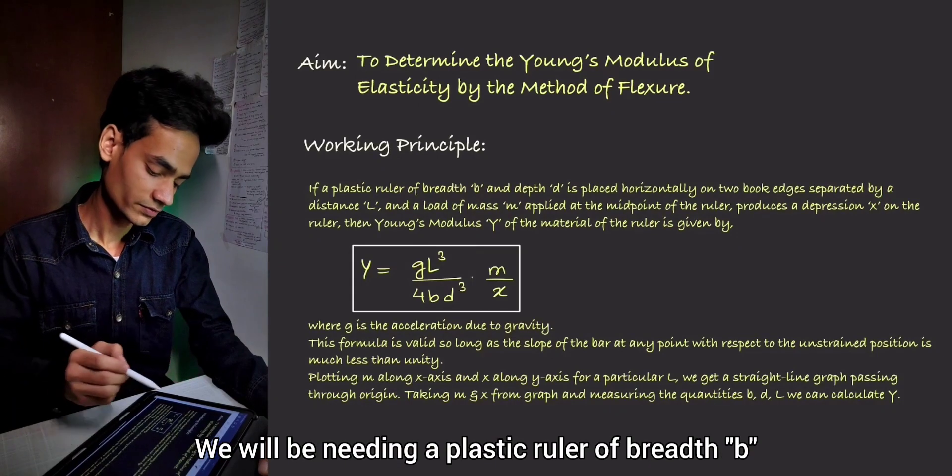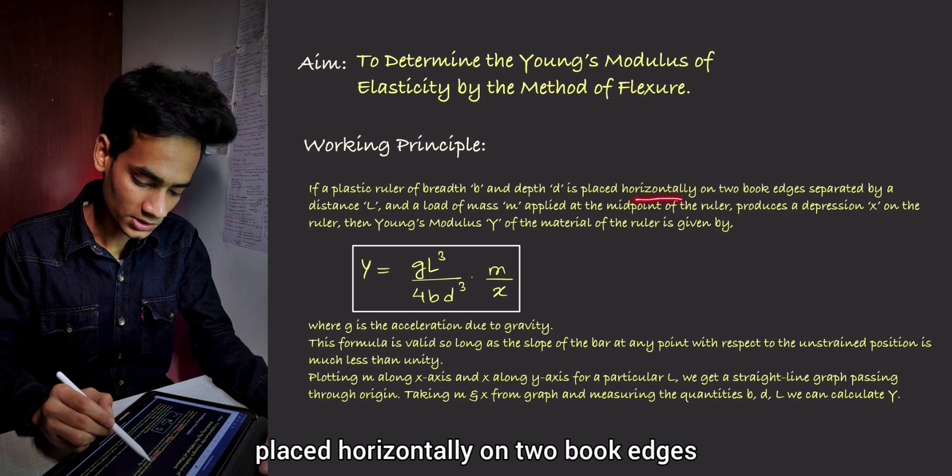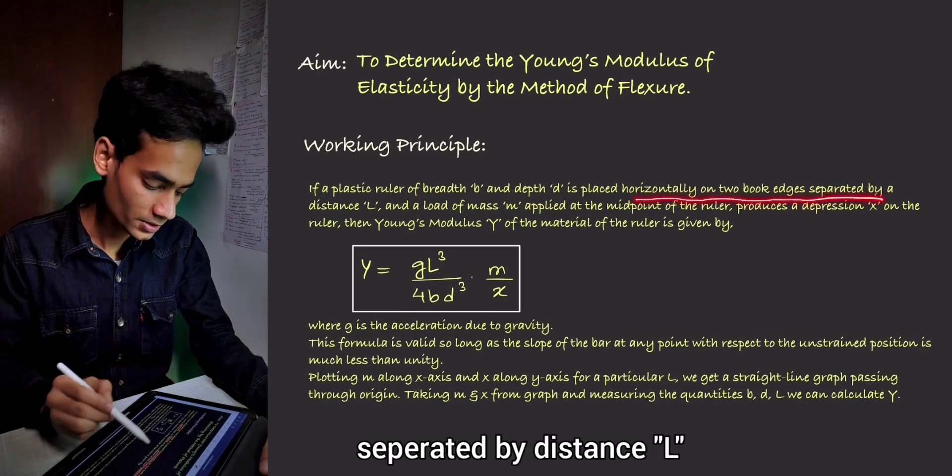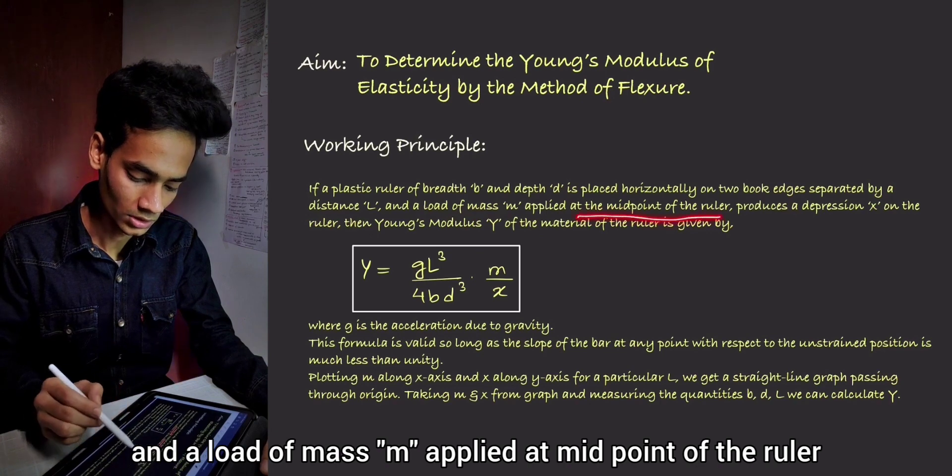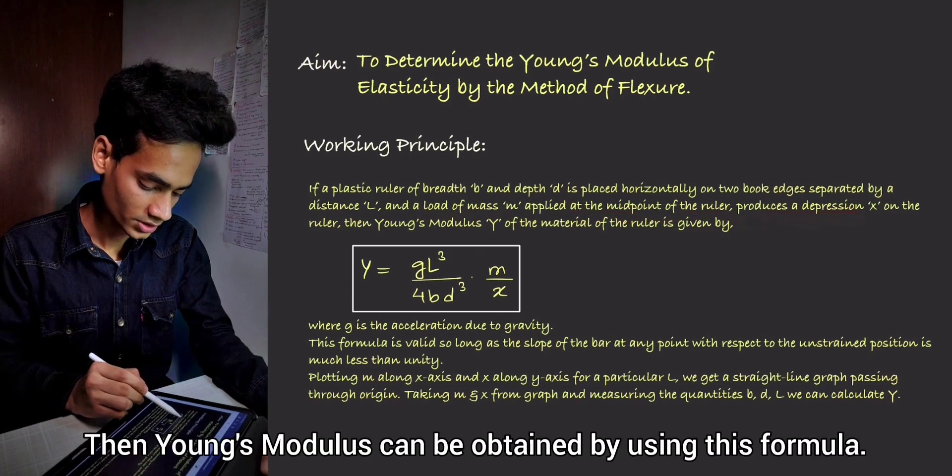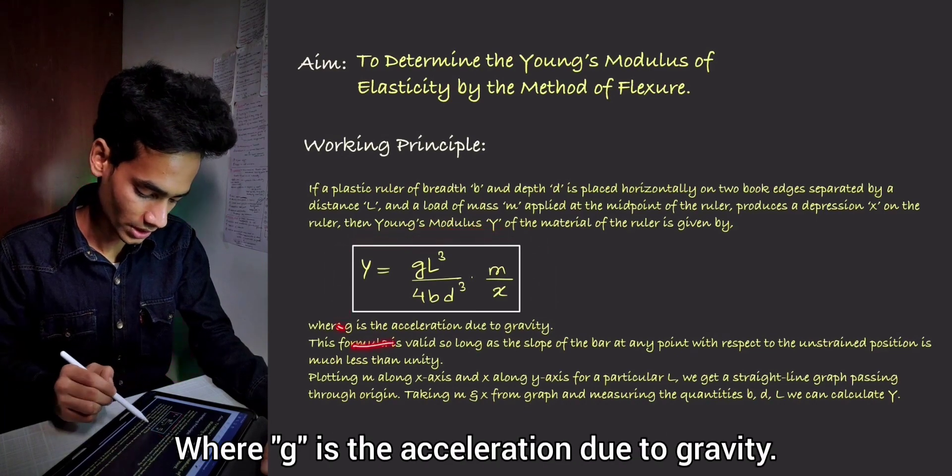In order to perform this experiment, we will be needing a plastic ruler of breadth B and depth D placed horizontally on two book edges separated by a distance L and a load of mass M applied at midpoint of the ruler. It will produce a depression X on the ruler. Then Young's modulus Y can be obtained by using this formula, where g is the acceleration due to gravity.